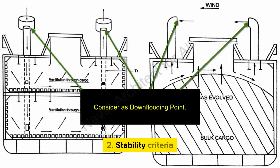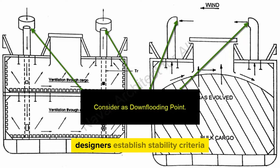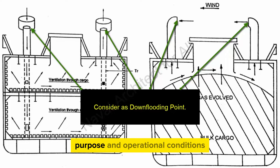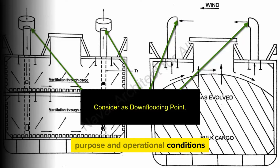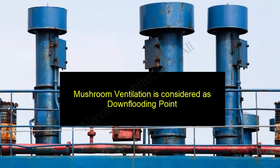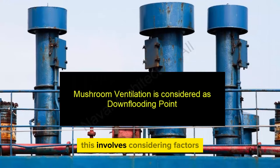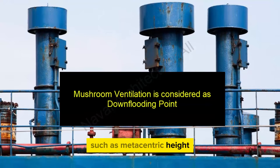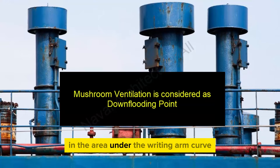2. Stability Criteria. Designers establish stability criteria based on the ship's type, purpose, and operational conditions. This involves considering factors such as metacentric height, GM, righting arms, and the area under the righting arm curve.